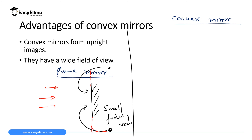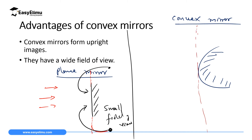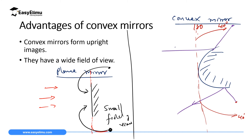A convex mirror, being curved like a section of a sphere, can extend beyond the 180 degrees of a plane mirror. It can extend roughly 40 degrees on each side, so that objects slightly behind the mirror's edges are still visible. This means a convex mirror can cover an angle of more than 180 plus 80, giving approximately 260 degrees, which is a very wide field of view.